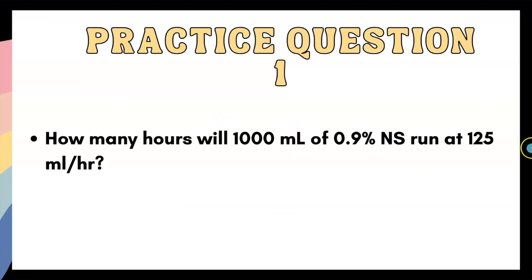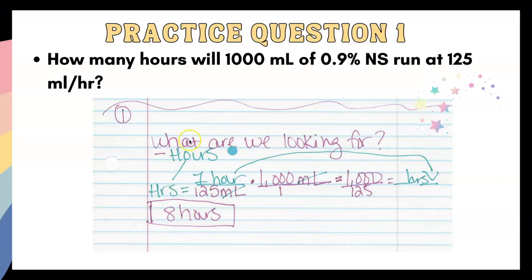Now let's get to our practice questions. How many hours will 1,000 milliliters of normal saline run at 125 mls per hour? With dimensional analysis, you always want to ask yourself, what are we looking for? And you're looking for hours. Going back to my ABC method, we are looking for hours.